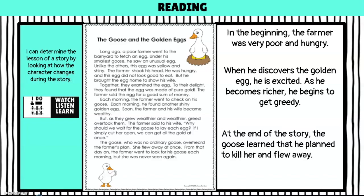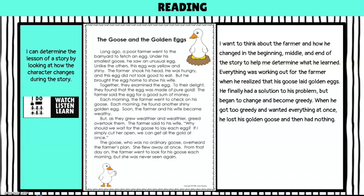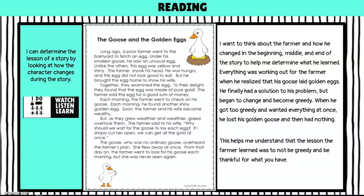I can definitely see what the problem is now. I want to think about the farmer and how he changed in the beginning, middle, and end of the story to help me determine what he learned. Everything was working out for the farmer when he realized his goose laid golden eggs — he finally had a solution to his problem of being poor and hungry. But he began to change and became greedy. When he got too greedy and wanted everything at once, he lost his golden goose and had nothing. So because he was very greedy, he lost his golden goose and had nothing. This helps me realize that the lesson the farmer learned was not to be greedy and to be thankful for what you have.